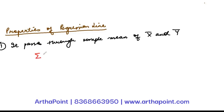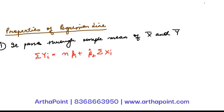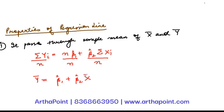My first normal equation that I derived was: summation yi equals n·β₁̂ plus β₂̂·summation xi. From here, solve for β₁̂. Alternatively, you don't even have to solve for β₁̂. In fact, you can directly divide throughout by n. If I directly divide throughout by n, I will get: ȳ equals β₁̂ plus β₂̂·x̄.